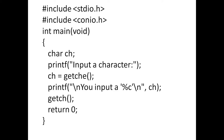Hash include stdio.h, hash include conio.h, int main. char ch — ch is a variable of character type. Then we display 'input a character'. Next, ch is equal to getche. Then printf with newline character slash n, 'you input a', percent c, slash n, comma ch.